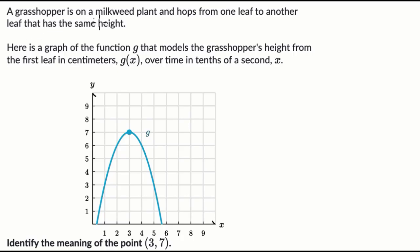We're told a grasshopper is on a milkweed plant. It hops from one leaf to another that has the same height. So if this is one leaf here, there's another leaf over here that's the same height. And then we have a grasshopper. This is the grasshopper right over here, and it jumps from one leaf to the other.